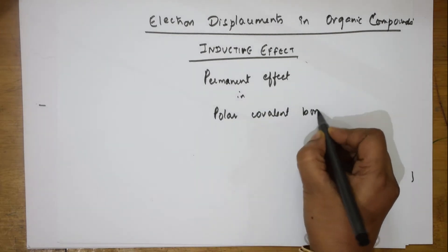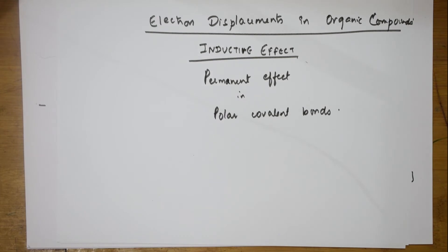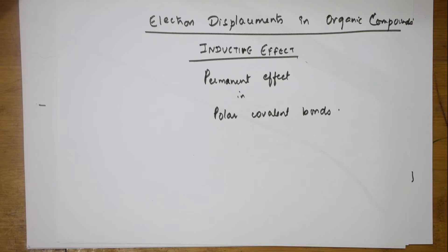In polar covalent bonds, there is a drift of the shared pair of electrons toward the more electronegative element. When this shift occurs, fractional charges are formed — the more electronegative atom acquires a partial negative charge, while the atom that has lost electron density acquires a partial positive charge. This happens due to the difference in electronegativity between the bonded atoms.